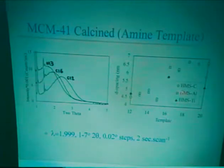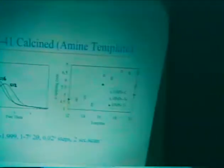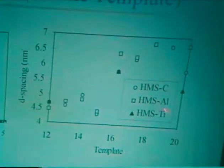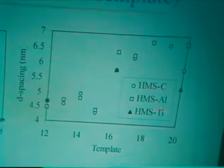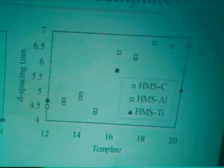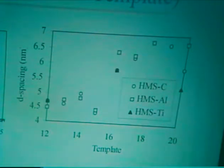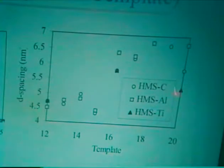On the right-hand side, we have D-spacings against template chain length for hexagonal mesoporous silica which has been calcined, and with aluminium and titanium added. You can see there's a general increase in pore size. We have one unusual pore size here — we'll need to do some further work. When we add high amounts of mesitylene, the pore size for the titanium and the calcined sample is slightly lower.